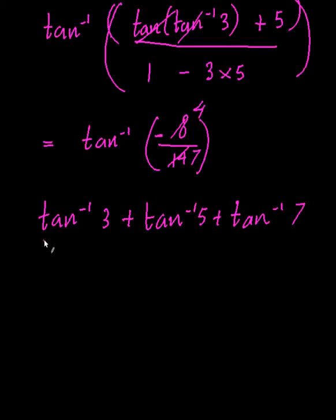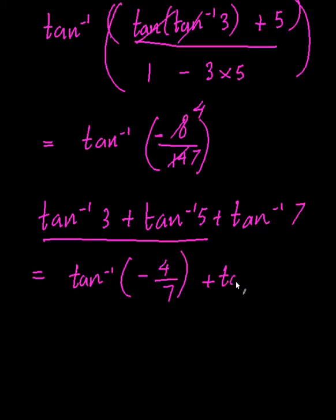Suppose I had tan inverse of 3 plus tan inverse of 5 plus tan inverse of 7. So what you're going to end up doing is you're going to be doing 2 at a time, so you're going to say this is equal to, I just found out this is equal to tan inverse of negative 4 on 7, and plus tan inverse of 7 again. So you use the same trick twice.